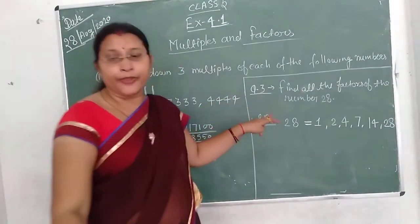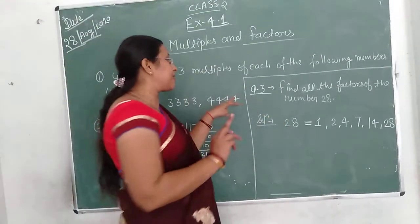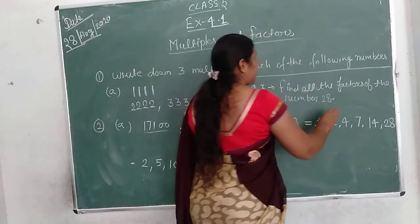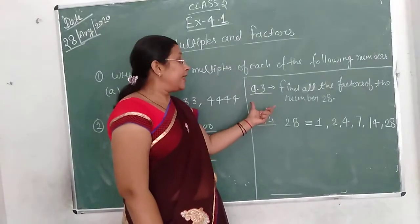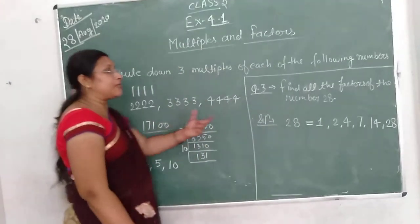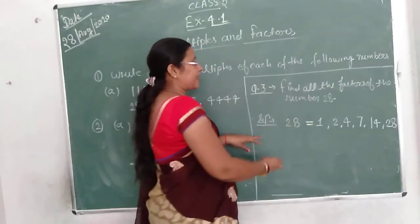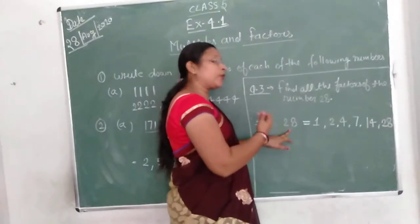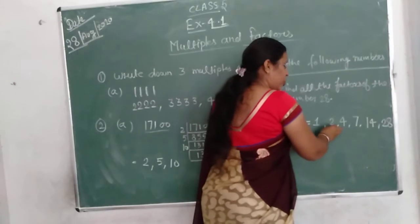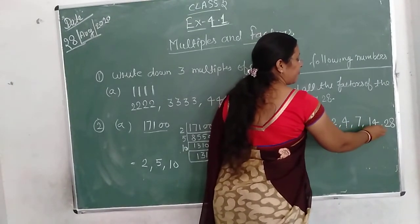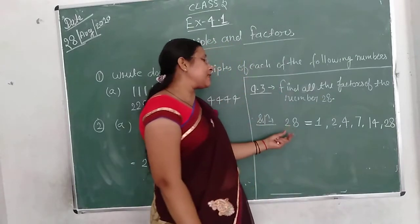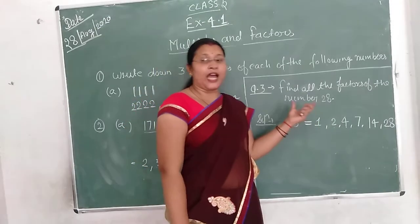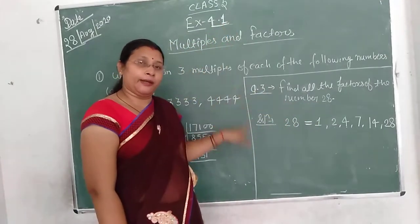Then question number three: find all factors of the number 28. We will identify two factors and three factors and all factors. Try to find them and complete Exercise 4.1.